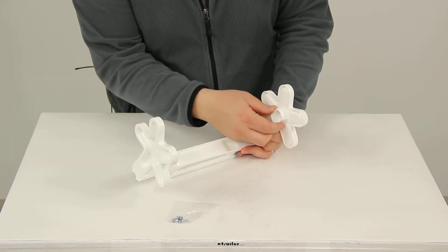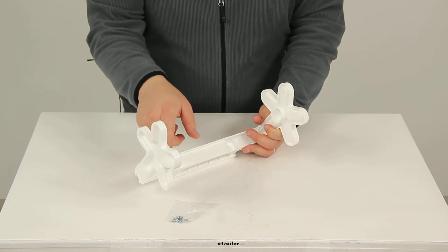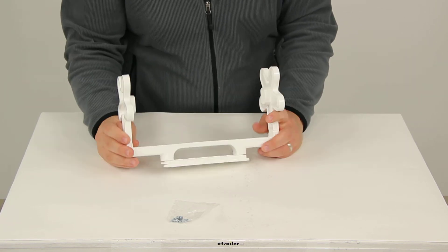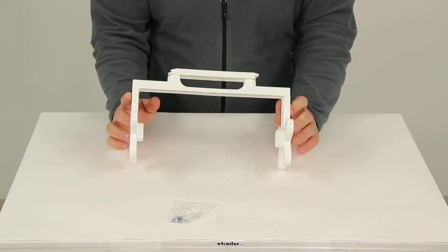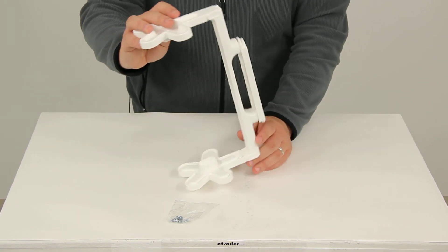You can see here that it has a nice little holes that fit the interior of the paper towel holder to help hold it in place. That's going to complete today's review of part number CAM57111.